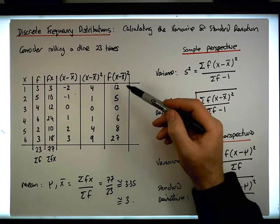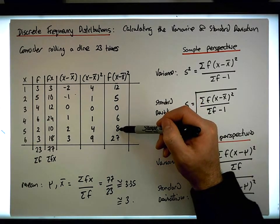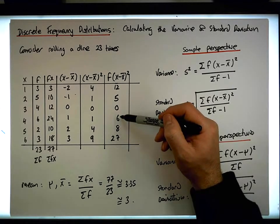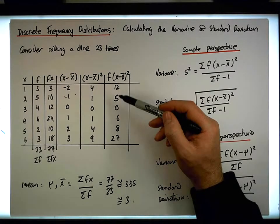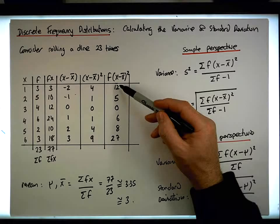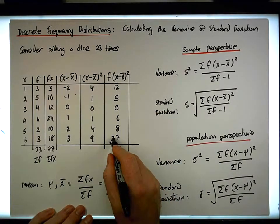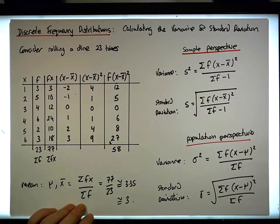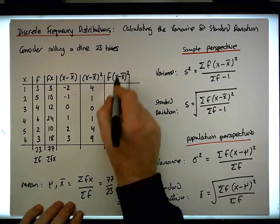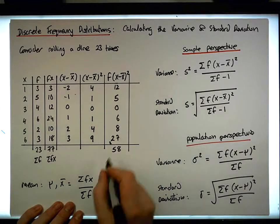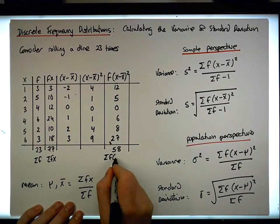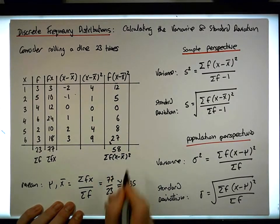So let's just sum these up. What do we get? We get 7 and 8 is 15. And 6 is 21. And 5 is 26. And 2 is 28. So put down the 8, carry the 2. 2 plus 2 is 4. Plus 1 gives us 5. So we get 58 here. This value is the sum of this column. So this is the sum of the frequencies times the x minus the x bar squared values.